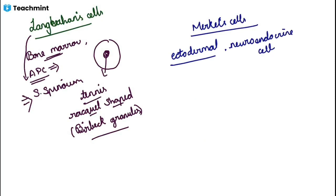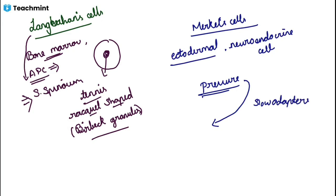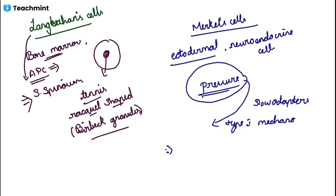The Merkel cell is present all over the skin, and whenever there is any touch stimulus, it will transmit the signal through the sensory pathway to the spinal cord and then to the brain. This is a slow-adapting type 1 mechanoreceptor. The question may ask which type of sensation is carried by the Merkel cell. The marker for Merkel cells is cytokeratin 20 — just like melanocytes use certain markers for identifying melanoma, for Merkel cells the marker is cytokeratin 20.